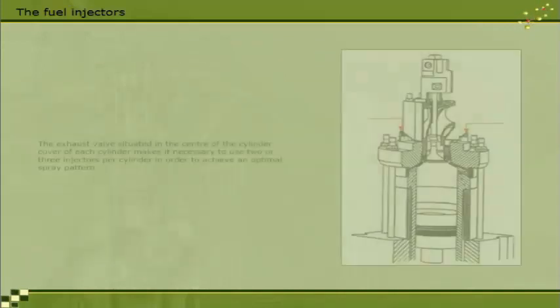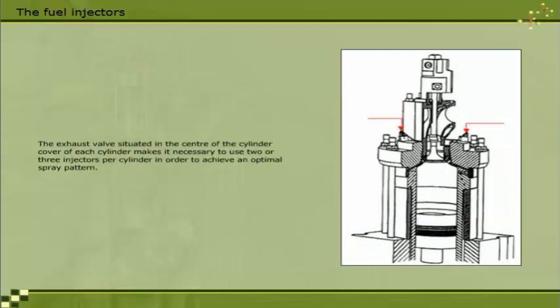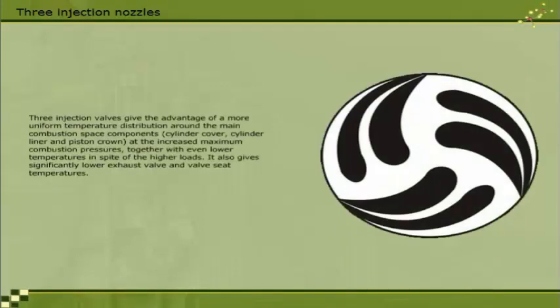The exhaust valve situated in the centre of the cylinder cover of each cylinder makes it necessary to use two or three injectors per cylinder in order to achieve an optimal spray pattern. Three injection valves give the advantage of a more uniform temperature distribution around the main combustion space components: cylinder cover, cylinder liner, and piston crown, at the increased maximum combustion pressures, together with even lower temperatures in spite of the higher loads. It also gives significantly lower exhaust valve and valve seat temperatures. The illustration shows the spray pattern from three injection nozzles.